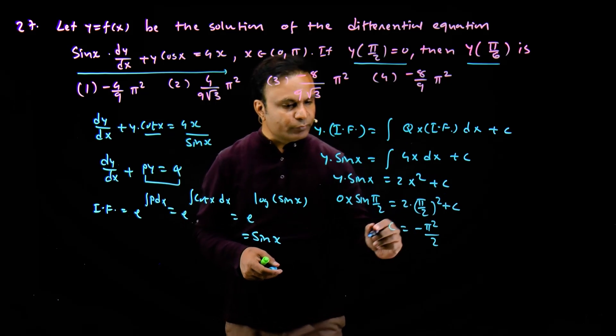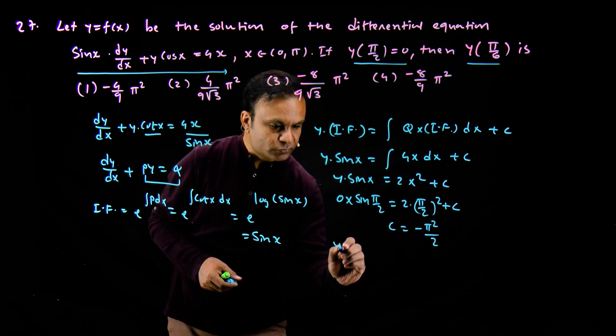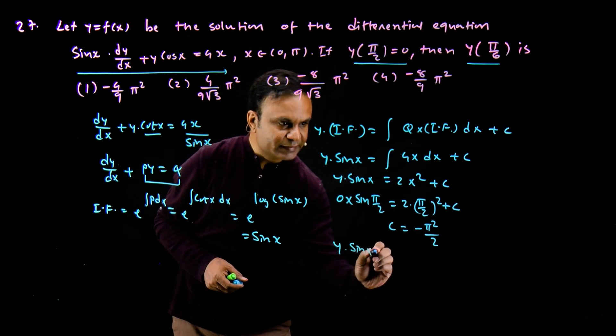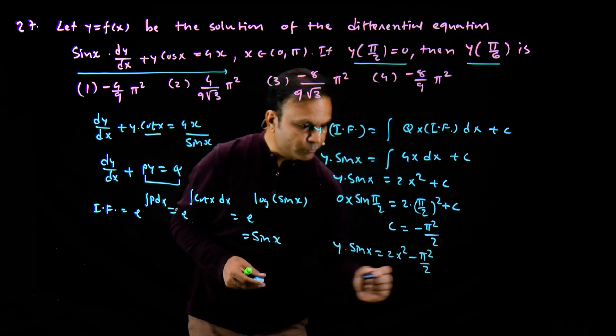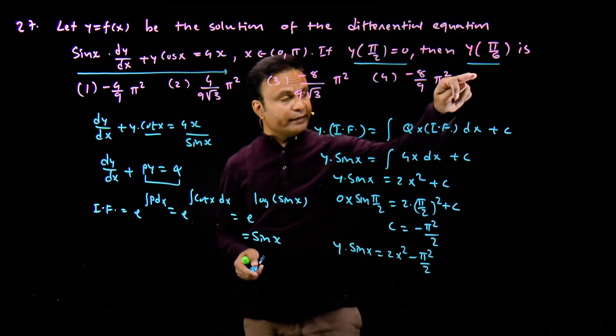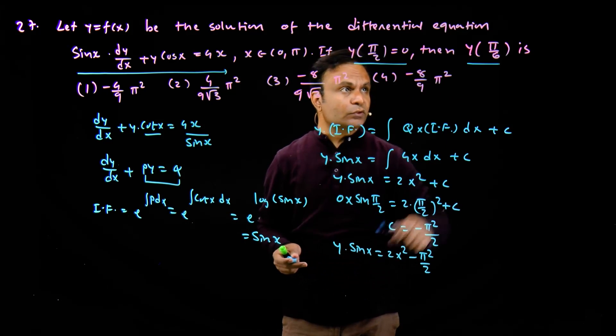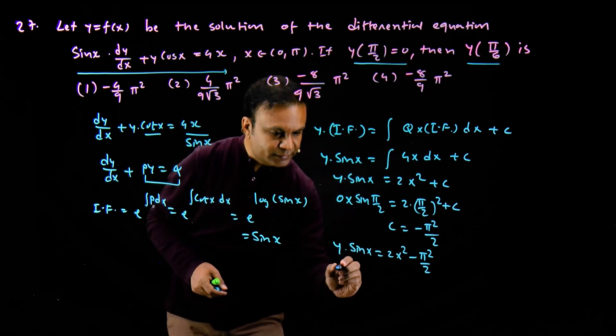We put this value of c here. So the final equation becomes y multiply by sin x is equal to 2x square minus pi square upon 2. We need the value of y when x is pi by 6, so we put x equal to pi by 6 here.